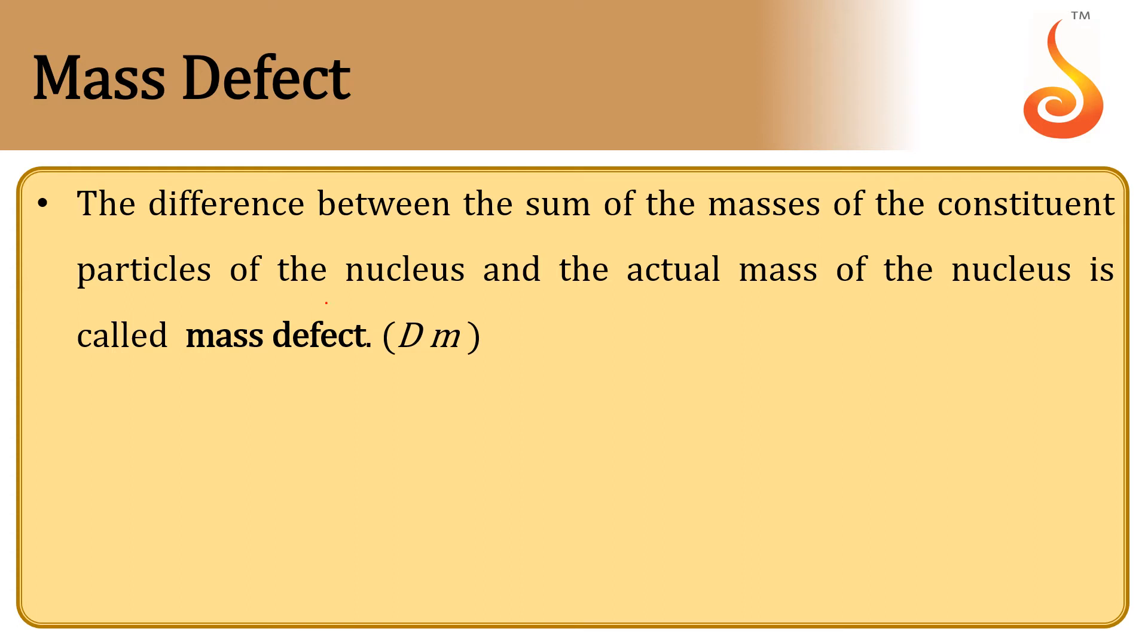For example, let us consider a nucleus of X whose atomic number is Z and mass number is A. That means it has Z protons and A minus Z neutrons.